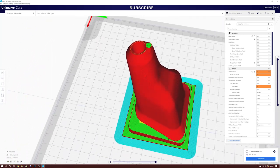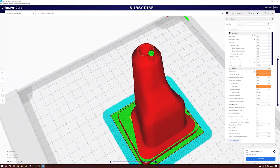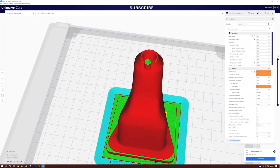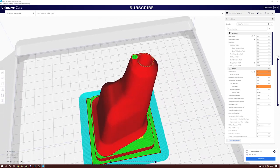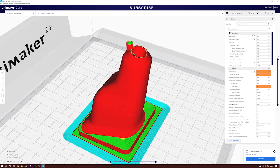The horn at the top is sacrificial and increases the size of the top layers to prevent heat building up too quickly and making a mess of the end of the part. It's easy to file off when the prints cool down.